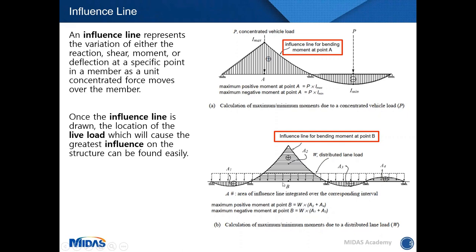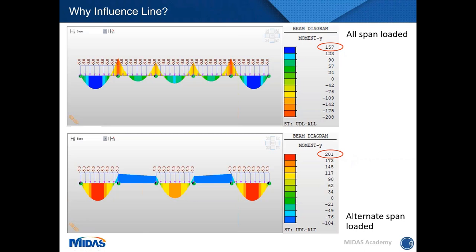To elaborate on the influence line concept: in case one, a five-span continuous bridge loaded on all spans gives a moment of 157. In case two, the same bridge loaded on alternate spans gives a much higher moment. More load does not necessarily mean more flexure or shear — the loading pattern derived from influence lines tells you where to load to get the maximum effects.